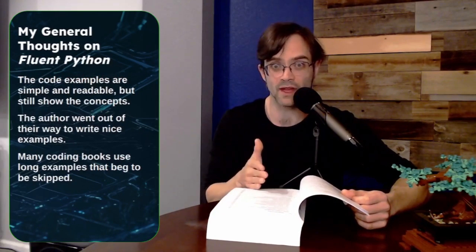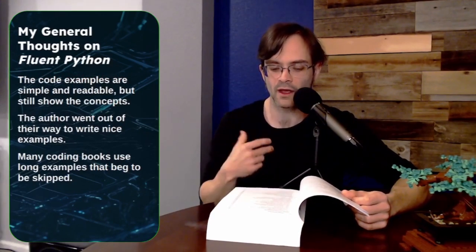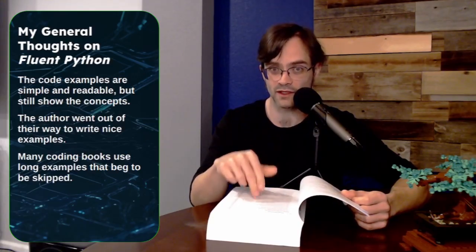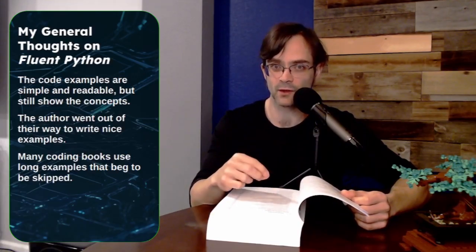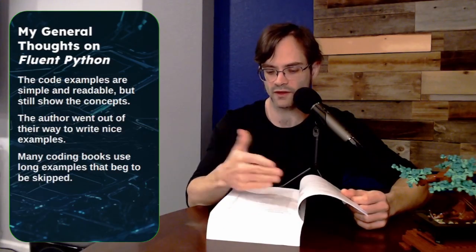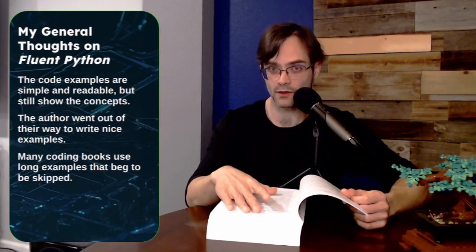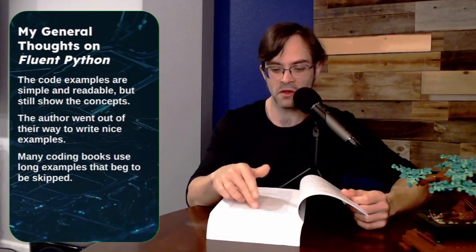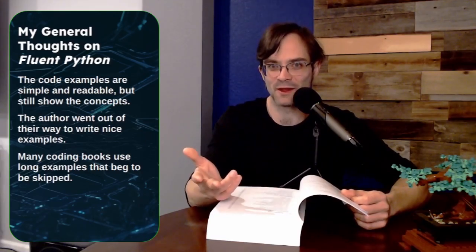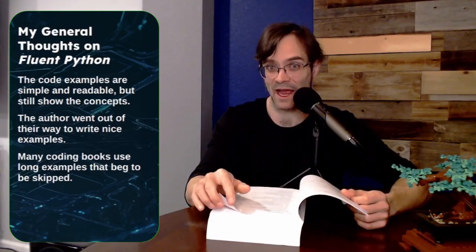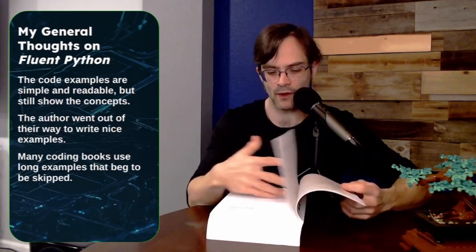So that's who should read which sections of Fluent Python, and I'd like to finish with some things that I generally liked and appreciated about the book. So I really like the way the code examples in this book are written. I feel like the author went out of his way to write code samples that are simple, but still illustrate the concept. And that's hard to do. A lot of coding books, they give big examples that are too long that most people skip. I read 90% of the coding examples in here. I'm not going to say I read every single one, but most of them, and they're great.